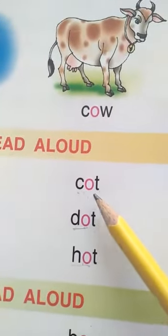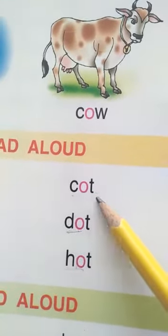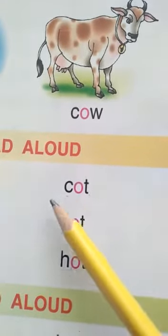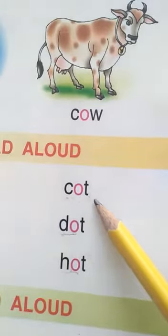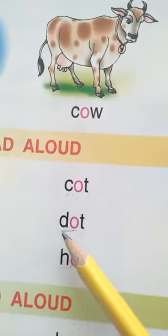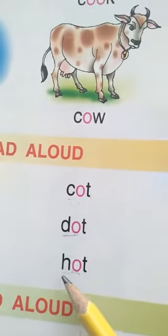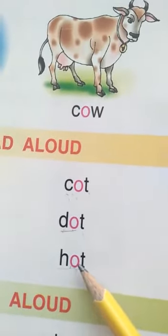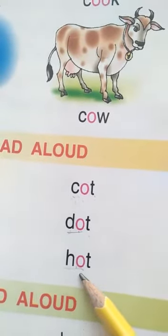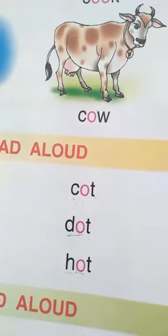C O T — Cot. C says K, O says O, T says T — K O T — Dot. D O T — This is D, O says O, T says T — Hot. H says H, O says O, T says T — H O T — Hot.